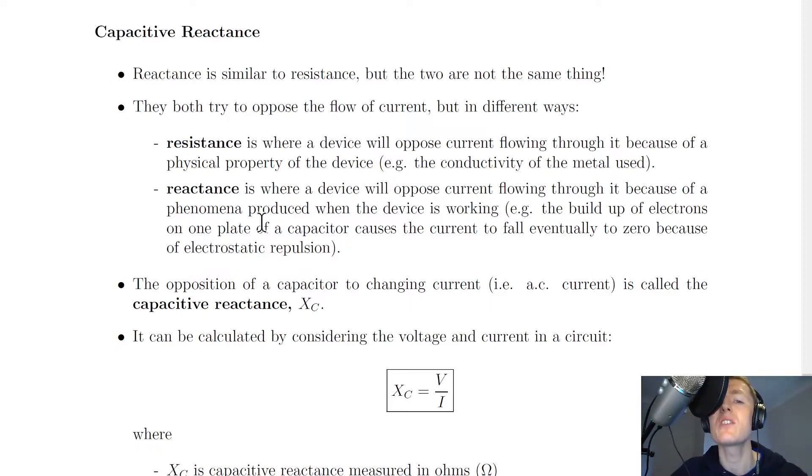Whereas reactance, on the other hand, is where a device will oppose current flowing through it because of a phenomena produced when the device is working. For example, the buildup of electrons on one plate of a capacitor causes the current to fall eventually to zero because of electrostatic repulsion.